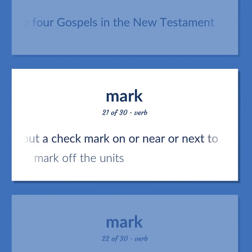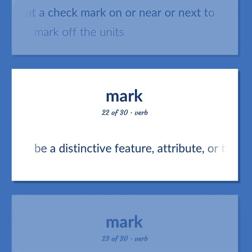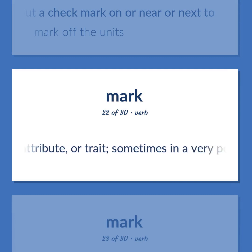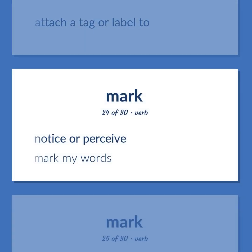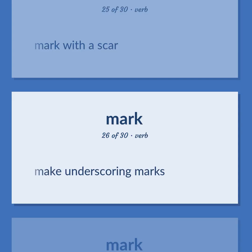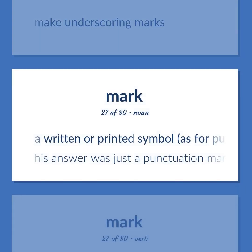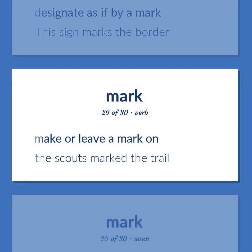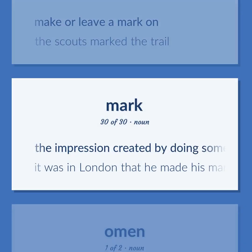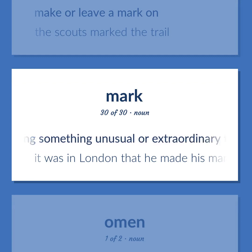Mark: Put a check mark on or near or next to. Example: Mark off the units. Be a distinctive feature, attribute, or trait, sometimes in a very positive sense. Attach a tag or label to. Notice or perceive. Example: Mark my words. Mark with a scar. Make underscoring marks. A written or printed symbol, as for punctuation. Example: His answer was just a punctuation mark. Designate as if by a mark. Example: This sign marks the border. Make or leave a mark on. Example: The scouts marked the trail. The impression created by doing something unusual or extraordinary that people notice and remember. Example: It was in London that he made his mark.